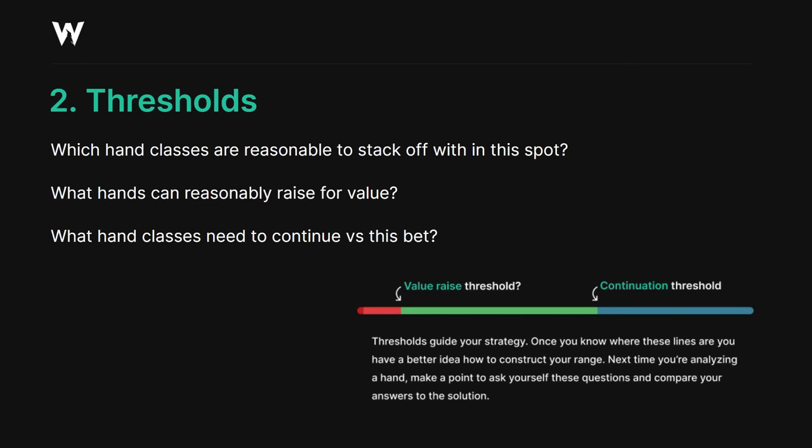A threshold is a line of indifference — what is the strongest hand I fold or the weakest hand I continue? That's your continuation threshold. Or if you're making a bet, what is the weakest hand I can bet for value? When I bet this hand and get called, I'm still ahead — that's a value bet. Understanding where these thresholds are on different boards, different textures, against different positions in different spots is fundamental to becoming a good poker player. Beginners always massively mis-evaluate these thresholds, commonly by overvaluing medium-strength hands that feel like big hands. So the next time you review a GTO solution, go out of your way to find your continuation threshold, value raise threshold, or value bet threshold. This is the quickest, easiest way to become a solid player without having to memorize everything.